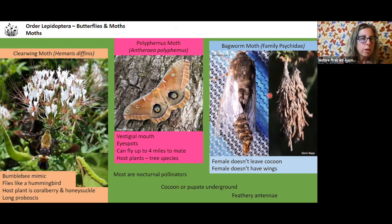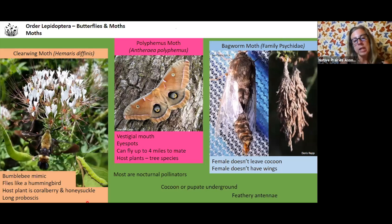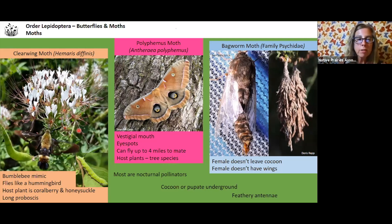The clear-winged moth is a daytime — diurnal — pollinator and mimics a bumblebee. It flies like a hummingbird; it could fly by you and you think hummingbird. The wings are clear because the scales have rubbed off. Their host plant is coral berry and honeysuckle, and they have a really long proboscis — as does this clammy weed flower, which requires a long tongue.